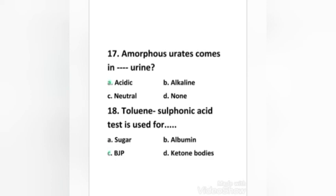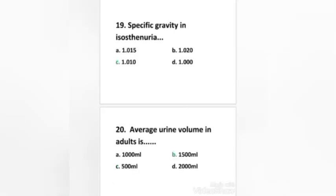Next question: the toluene sulfonic acid test is used for: sugar, albumin, Bence Jones protein, or ketone bodies. Right answer is option C, Bence Jones protein.